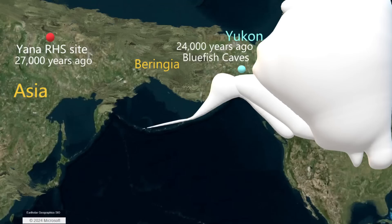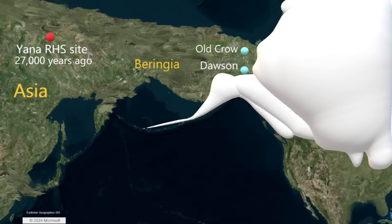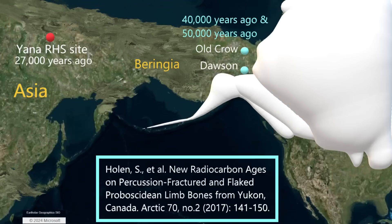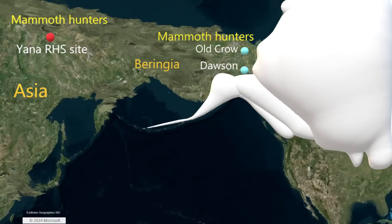The Yukon provides even more Pleistocene sites. While Bluefish Caves is consistent with Siberian sites from the same time, the Yukon has other sites with even older dates. Mammoth bone fractures consistent with human usage from near Dawson, Yukon and Old Crow, Yukon returned radiocarbon dates from 40,000 years ago and even 50,000 years ago. In addition to matching dates in Siberia and Alaska and the Yukon, there are similar cultural traits. Humans on both sides of Beringia were hunting large game, including mammoths.